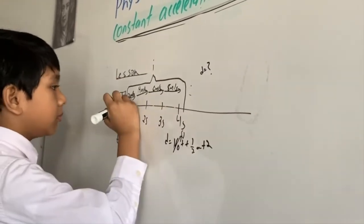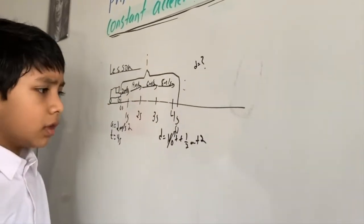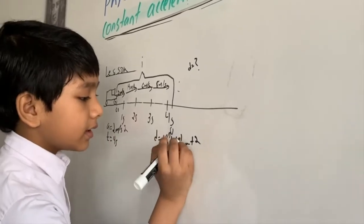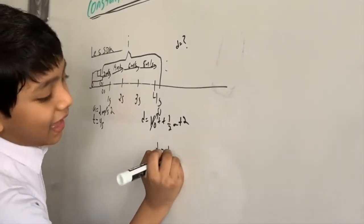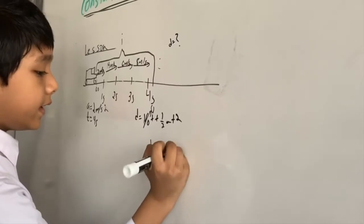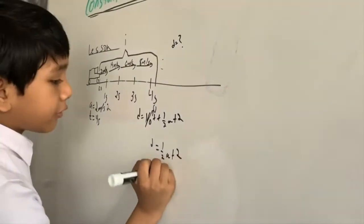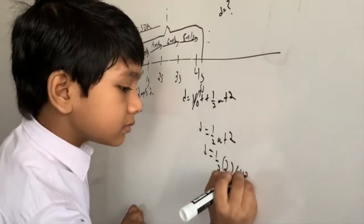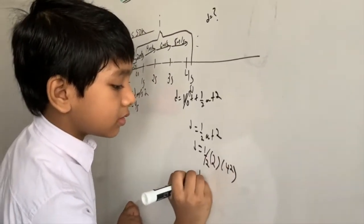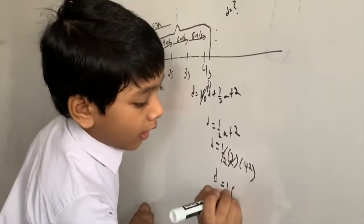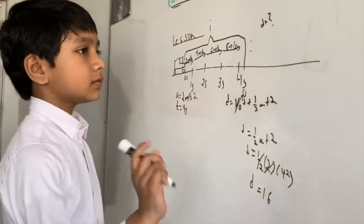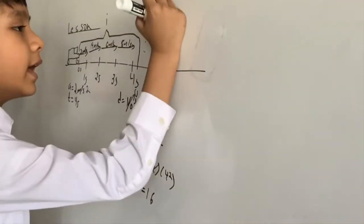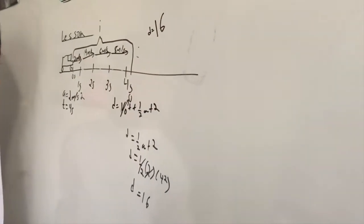Plug in our values and we get 16. So that's the first way to get your answer. But is it the truth? Let's prove it with the second way and then give it further evidence with the third.